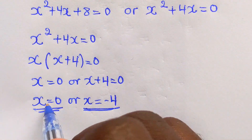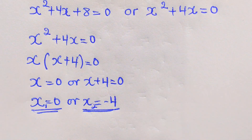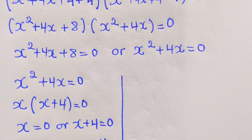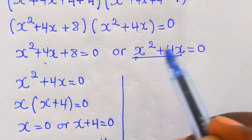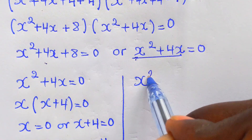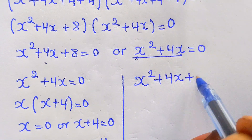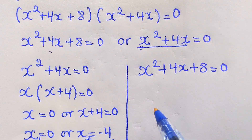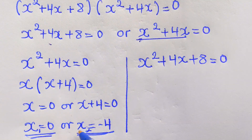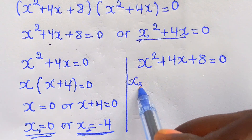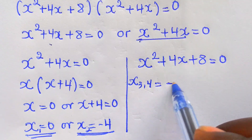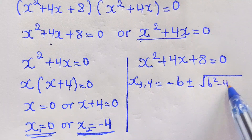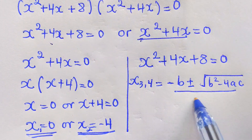These are x1 and x2, the real solutions. Now we have to find the other two imaginary parts of the solution. We have the quadratic equation x squared plus 4x plus 8 equal to zero. We will use the quadratic formula method for x3 and x4, which equals negative b plus or minus square root of b squared minus 4ac, all over 2a.